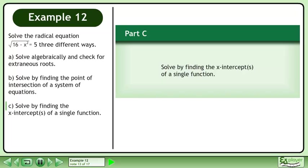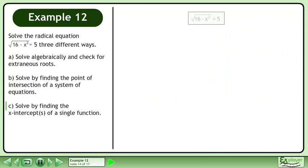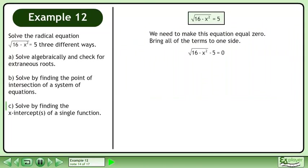In Part C, solve by finding the x-intercepts of a single function. Make this equation equal 0 by bringing all terms to one side. This gives us √(16-x²) - 5 = 0.